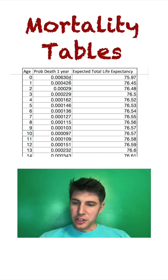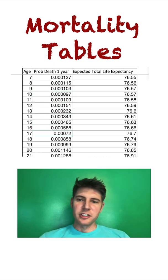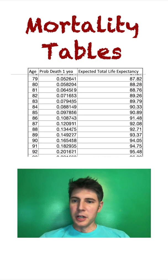As you get older, it starts to get a little bit higher, and as you get very old, it starts to get much higher. Someone who's 83 has an 8% chance of dying in the next year.